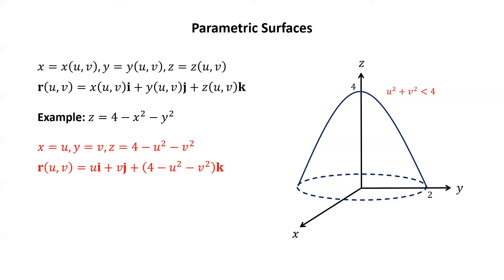Notice that the part of the paraboloid drawn in this picture is the part such that u squared plus v squared is less than 4. If u and v are both 0, then z equals 4, giving the point (0,0,4), which is the vertex of that paraboloid. If u squared plus v squared equals 4, then we're in the x-y plane, and since we used dashes to draw that circle, we're not including that as part of the paraboloid.